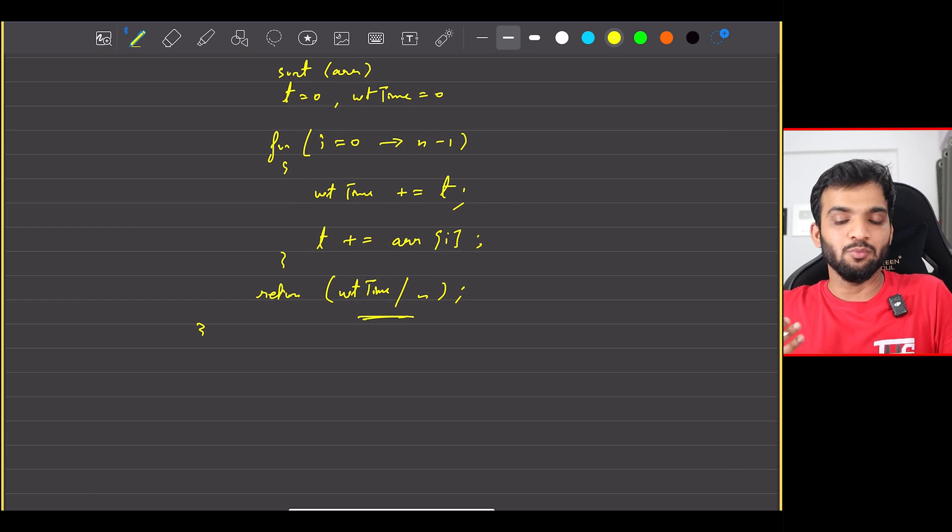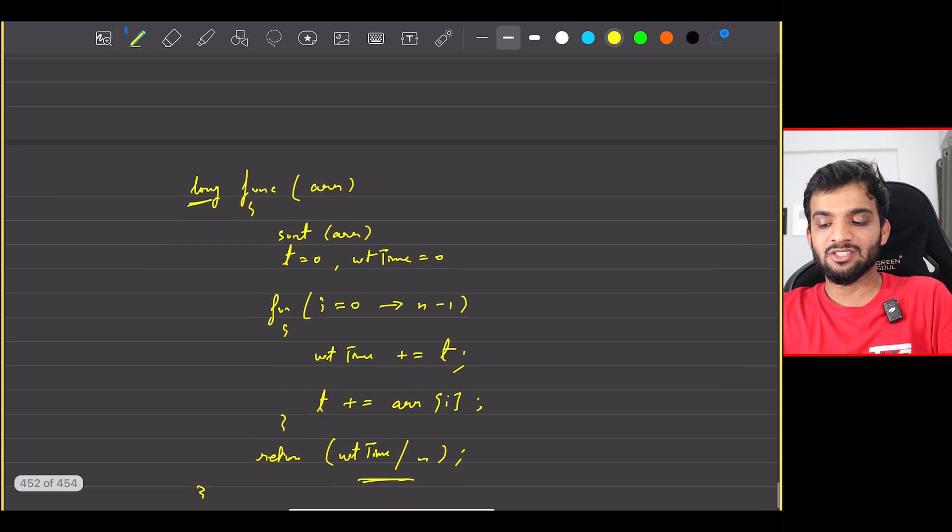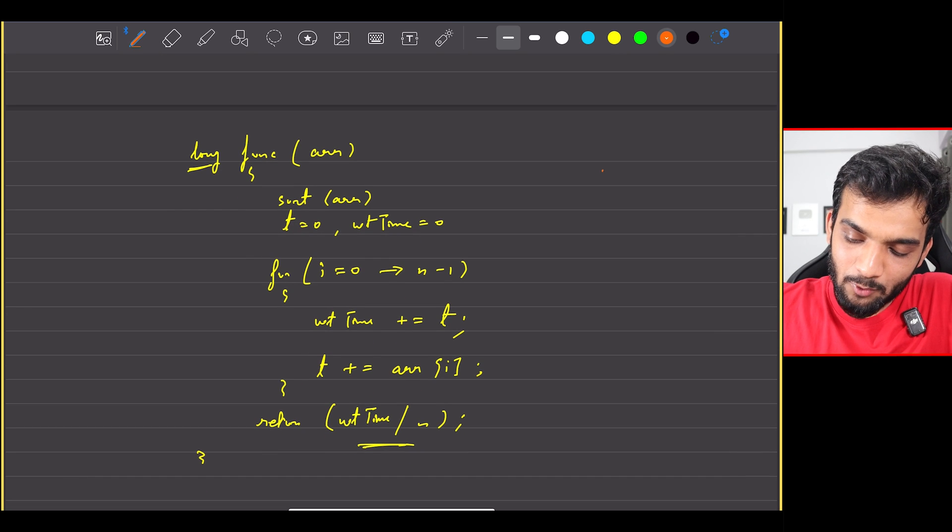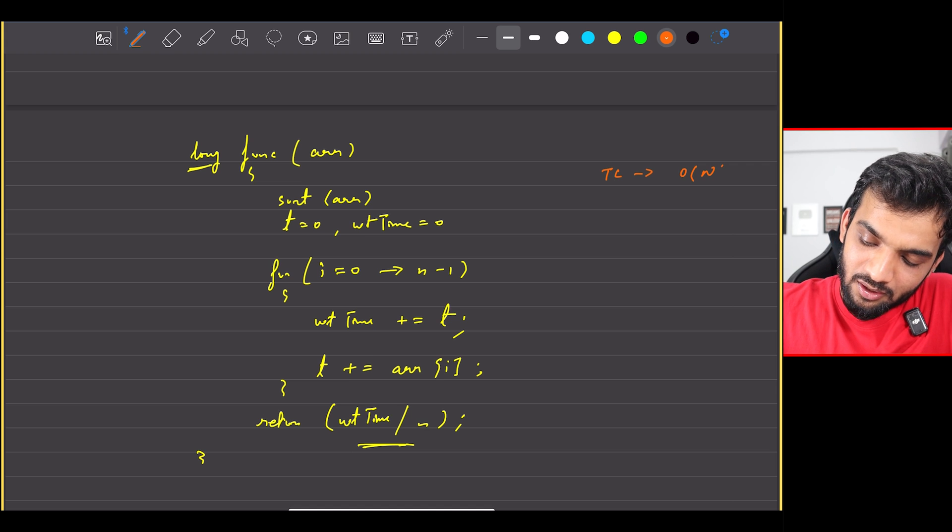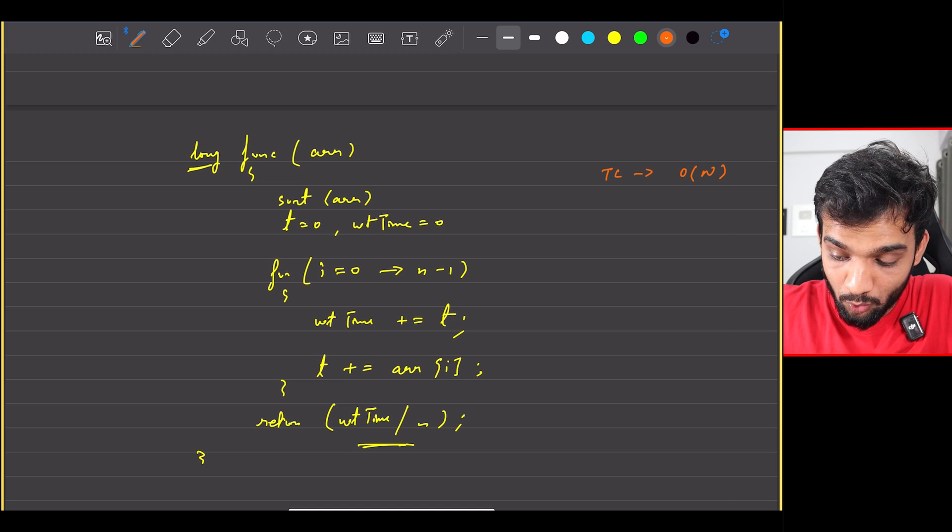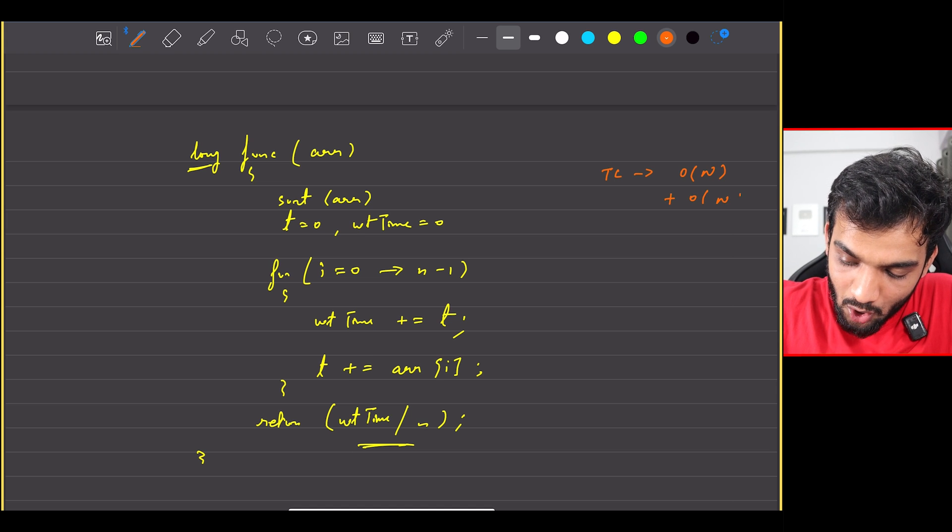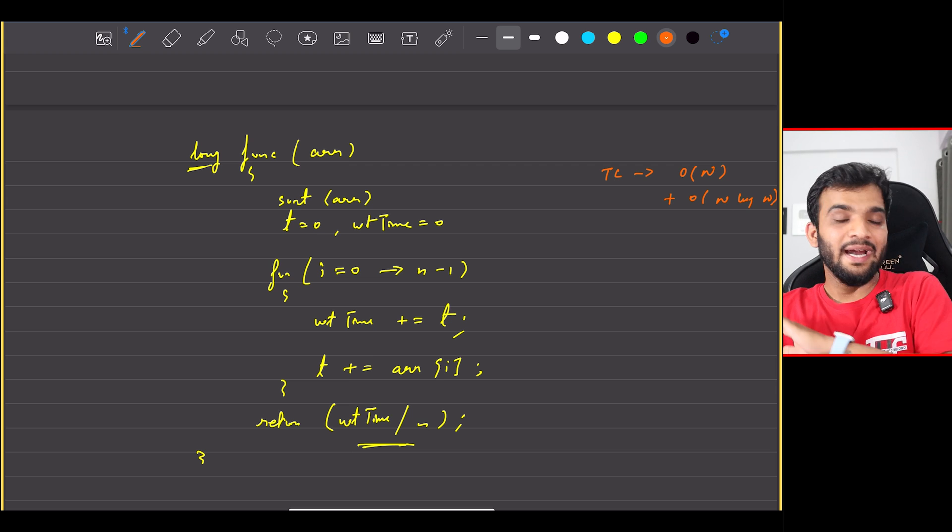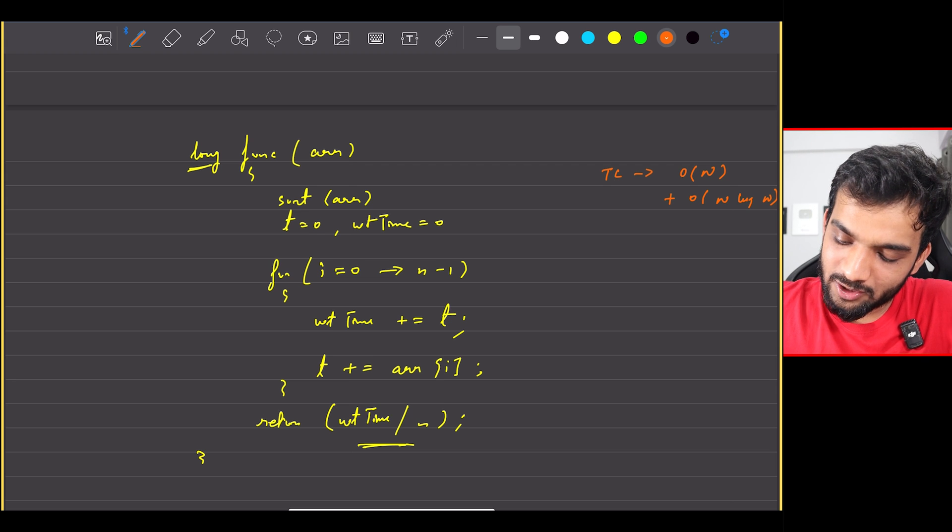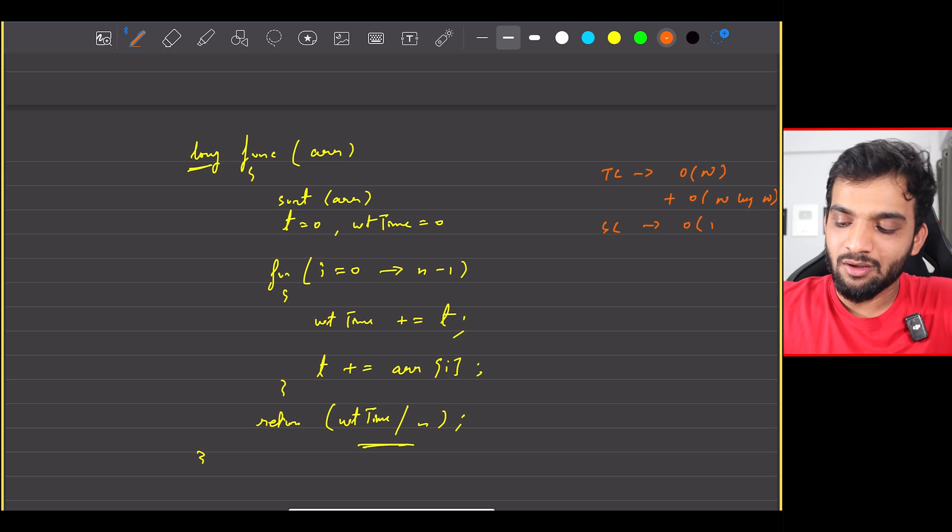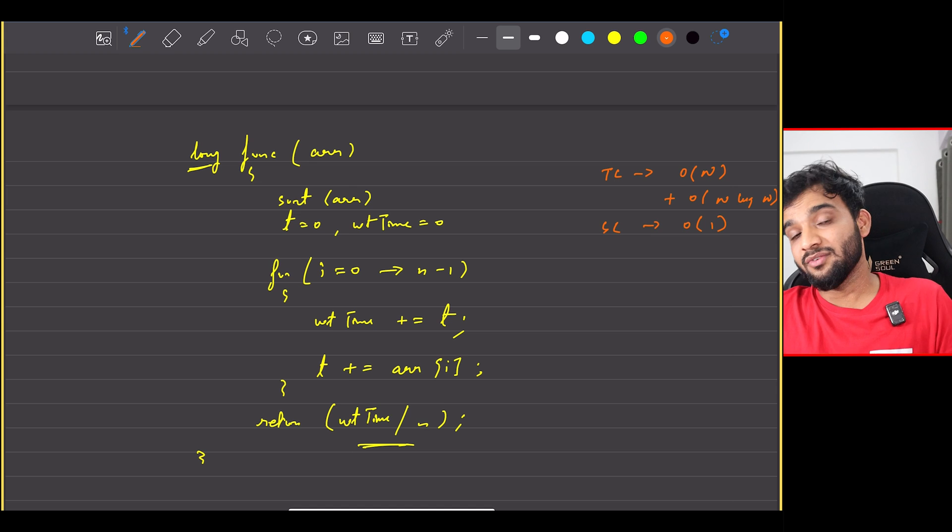And eventually you could go ahead and return the total time, which is wait time divided by n. And if it has an int or long return type, it will automatically get truncated to the smallest integer, leaving out the decimal part. What about the time complexity? That's O(n), is it? No, O(n) plus n log n, because I'm sorting and then I'm iterating.